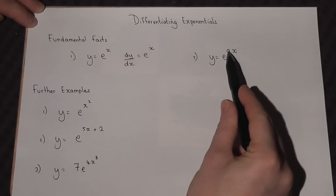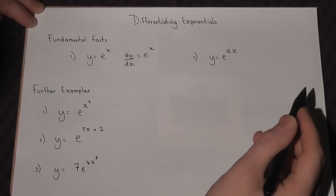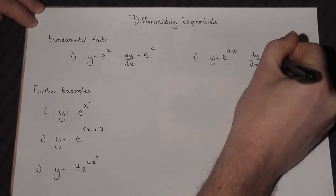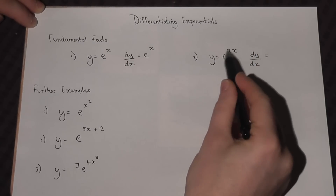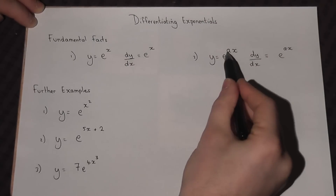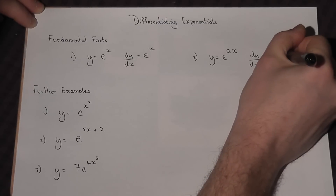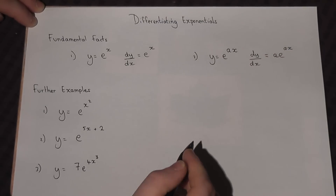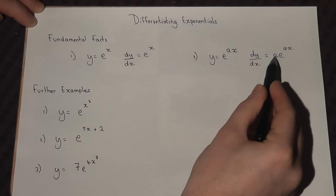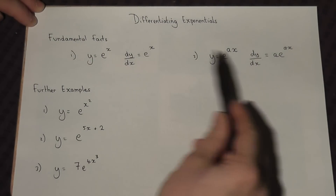However, if there's a constant, e to the ax, where a could be a number — five, seven, two point two, or a negative number — then if we differentiate, the chain rule says we differentiate e, which stays the same, and then multiply by the differential of the bit within the exponential. We multiply by a, because ax differentiates to just a. So it becomes a·e to the power of ax. It is worth knowing those two things.